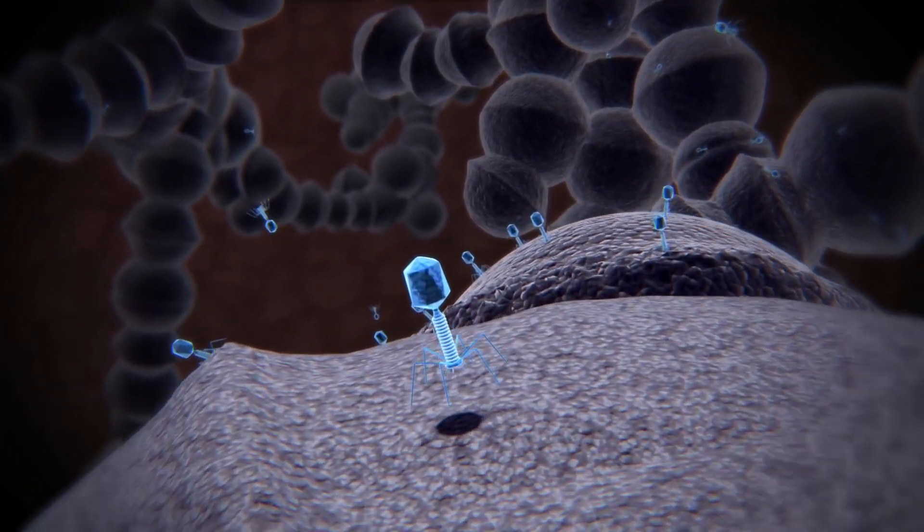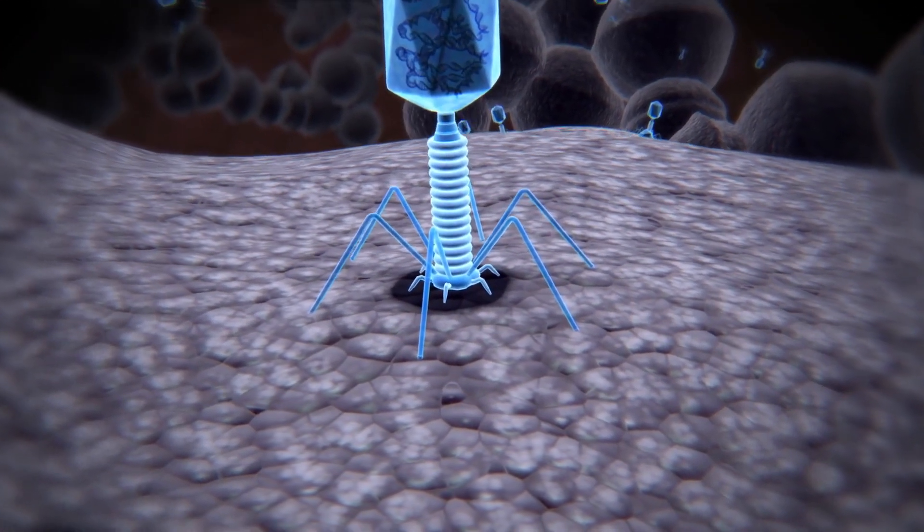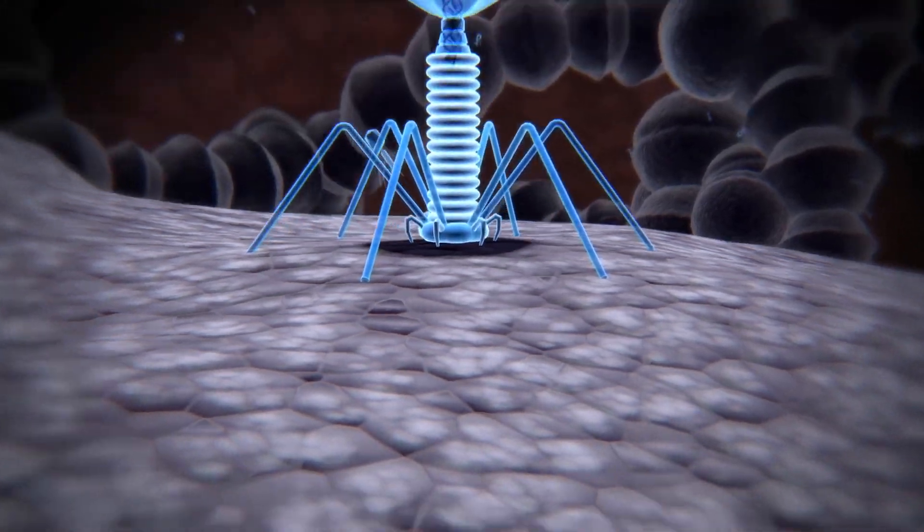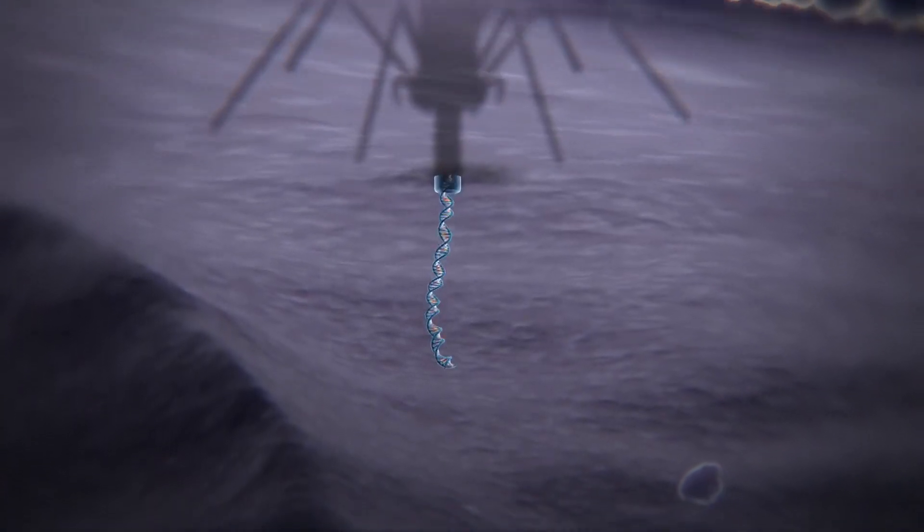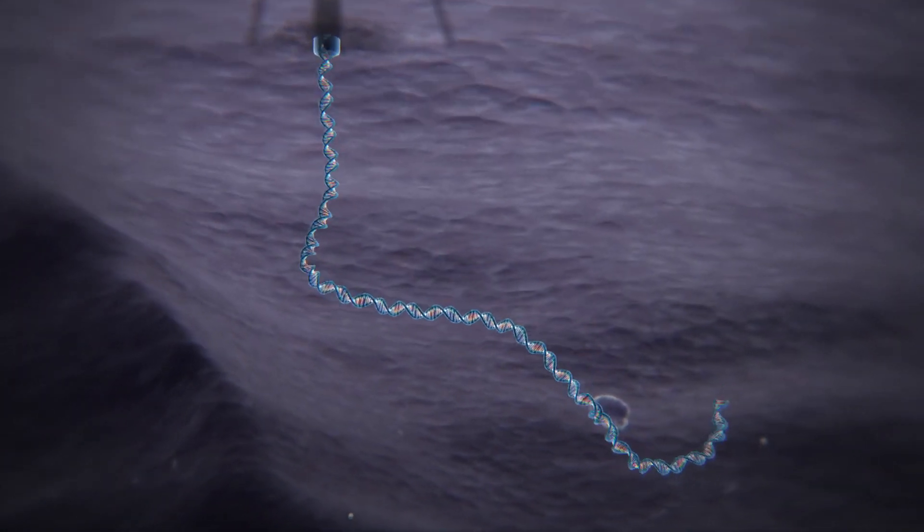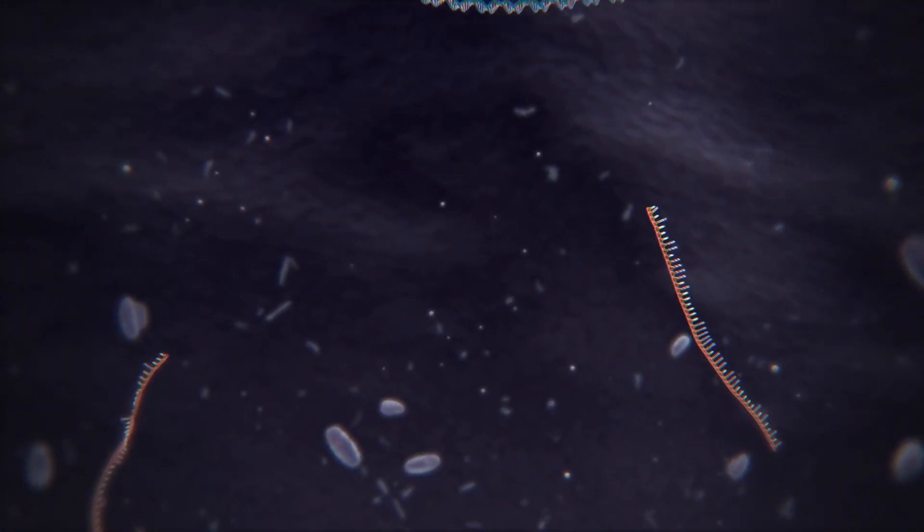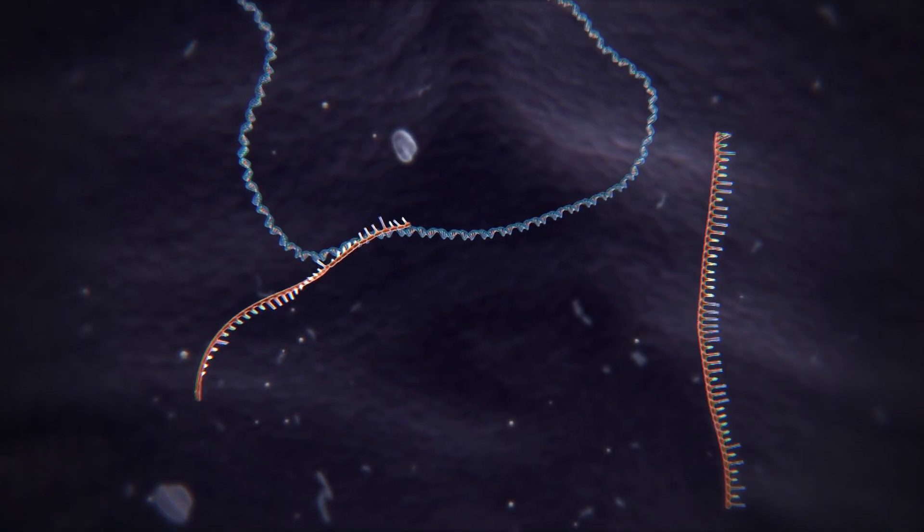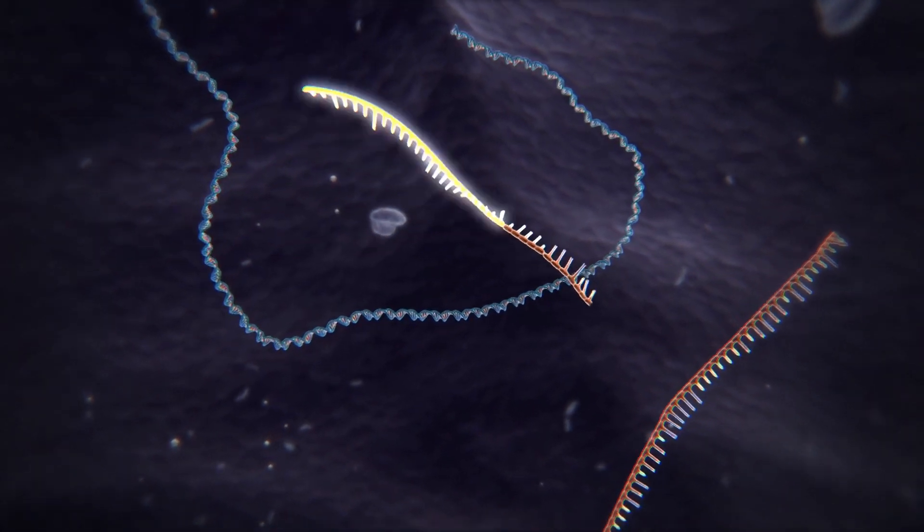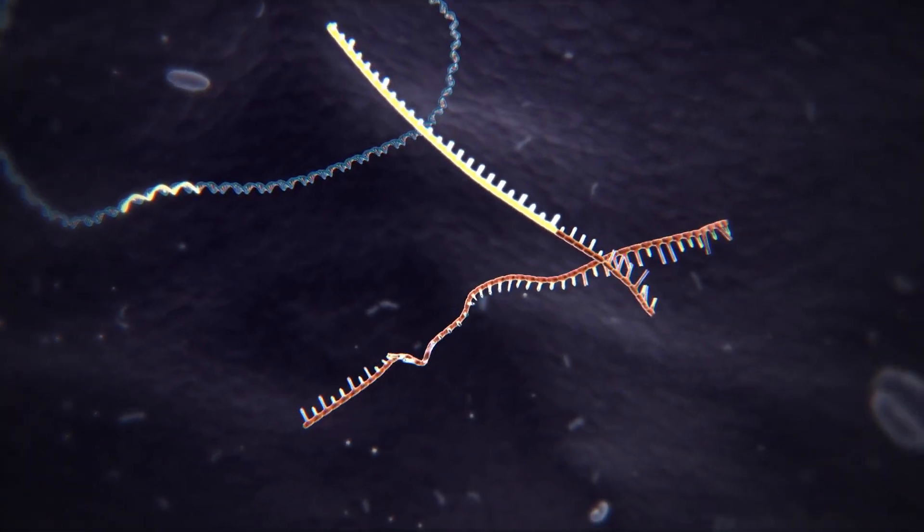The CRISPR method is based on a natural system used by bacteria to protect themselves from infection by viruses. When the bacterium detects the presence of virus DNA, it produces two types of short RNA, one of which contains a sequence that matches that of the invading virus.